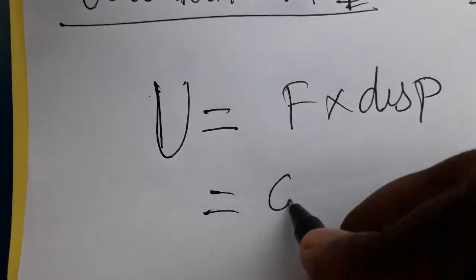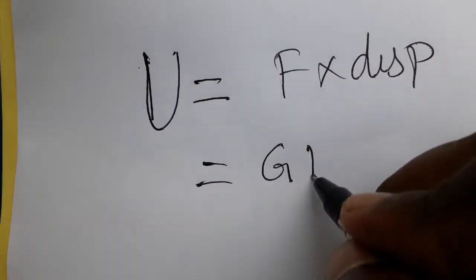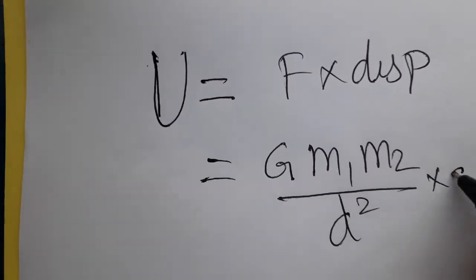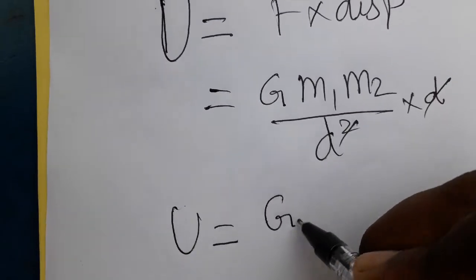The universal gravitational force is G times m₁m₂ divided by d squared. Distance is also d, so dd gets cancelled. That means U equals G times m₁m₂ divided by d.